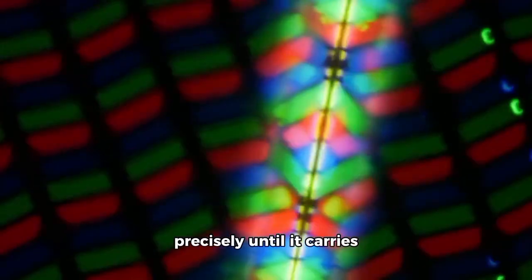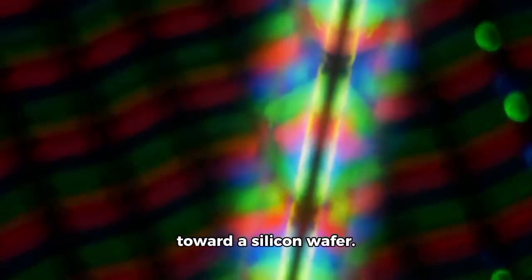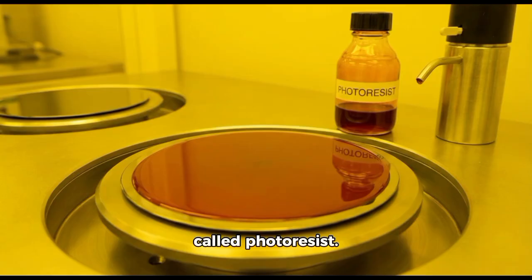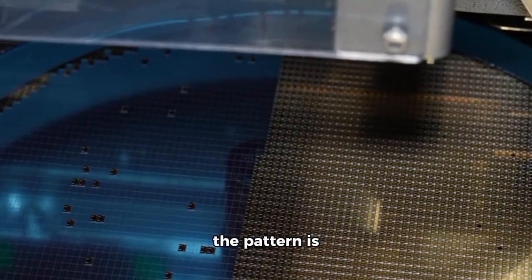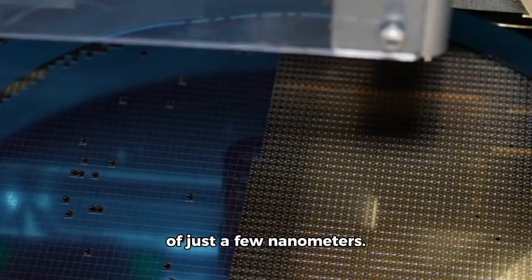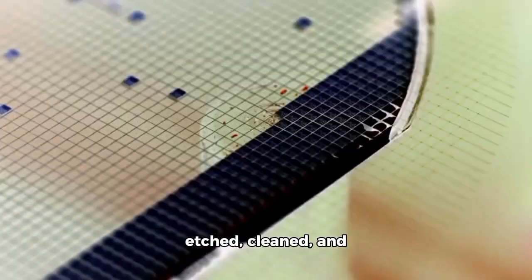The wafer is coated with a light-sensitive chemical called photoresist. When the UV light hits it, the pattern is transferred at a scale of just a few nanometers. The wafer is then developed, etched, cleaned, and repeated again and again, layer by layer.